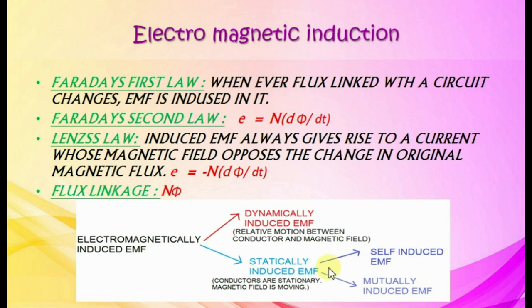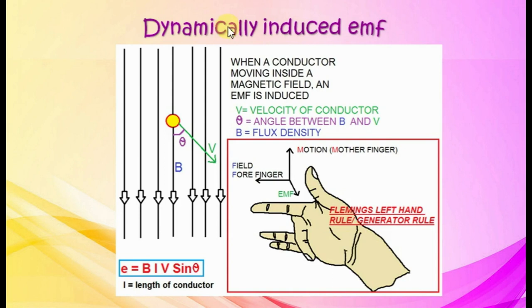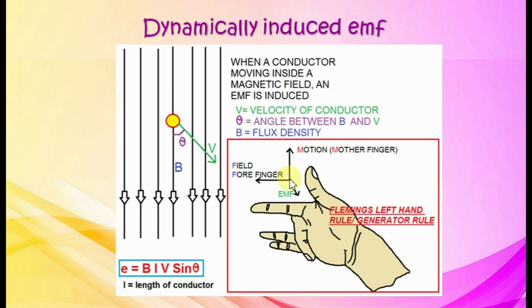Dynamically induced EMF: when a conductor moves inside a magnetic field, an EMF is induced. Its magnitude is B L V sine theta, where B is flux density, L is length of conductor, V is velocity, and theta is the angle between B and V. The direction is given by Fleming's right-hand rule (generator rule): thumb represents force, forefinger represents field, and middle finger represents EMF. This law is used in electric generators.